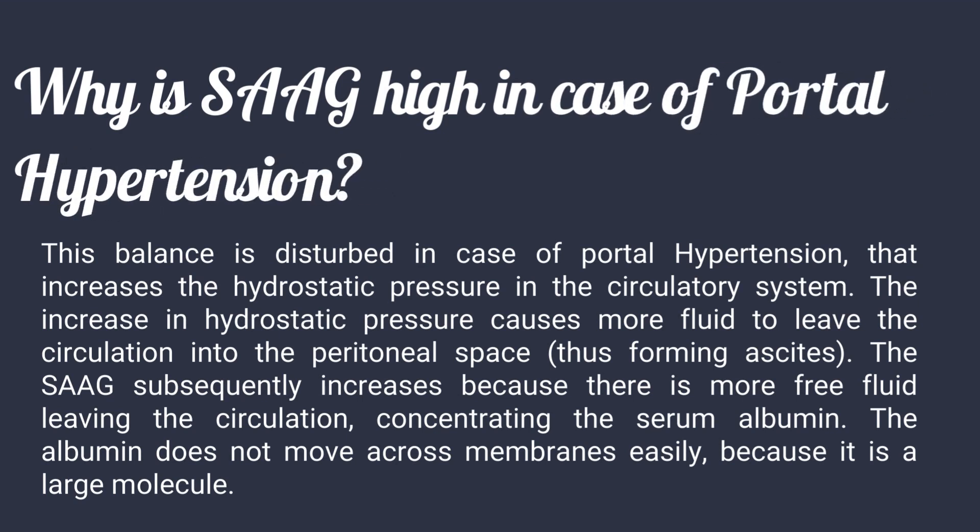Why is SAG high in portal hypertension? This balance is disturbed in portal hypertension, which increases hydrostatic pressure in the circulatory system. The increased hydrostatic pressure causes more fluid to leave circulation into the peritoneal space, forming ascites. SAG subsequently increases because more free fluid leaves the circulation, concentrating the serum albumin, which does not move across membranes easily as it is a large molecule.